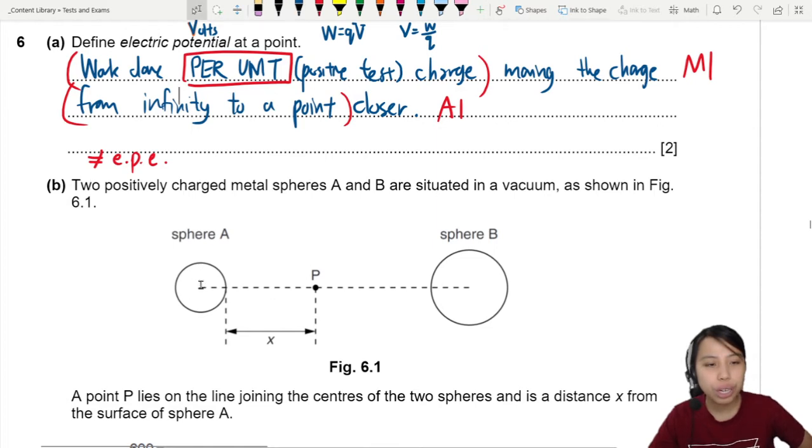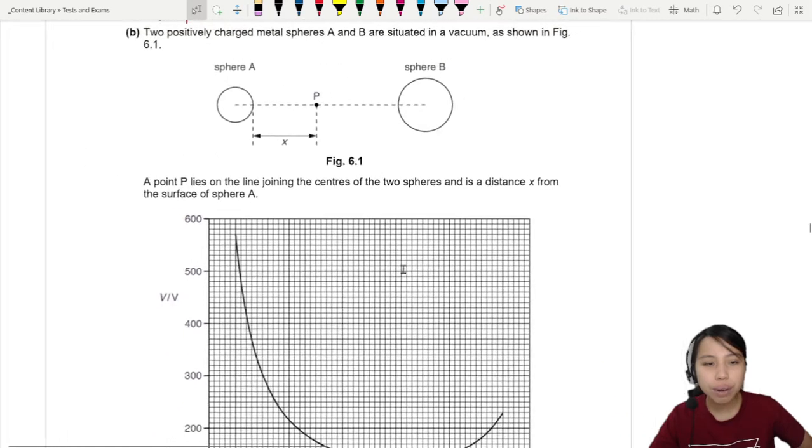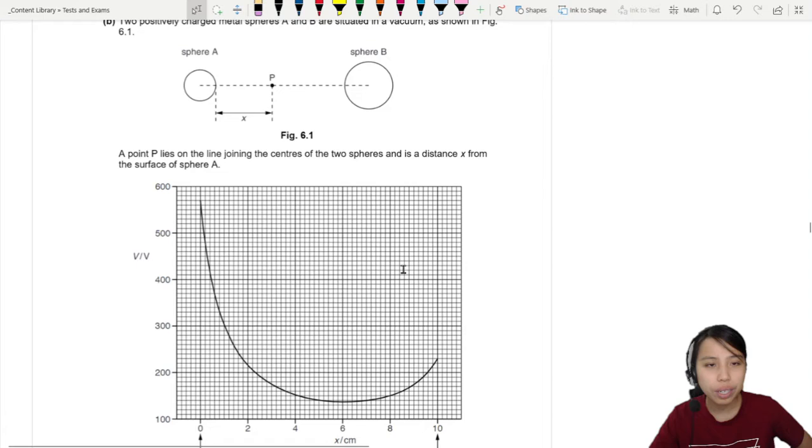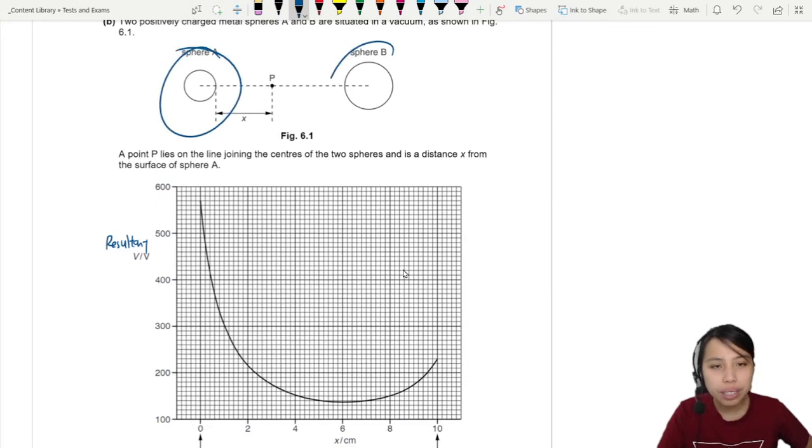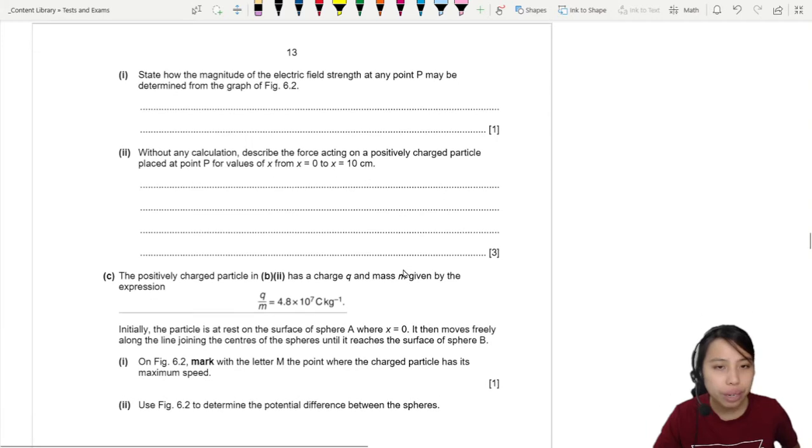Our setup here is we have two charged spheres, A and B, and you have a point P in between where you're going to be traveling on. So they give us the graph of potential between the two spheres. This is a resultant potential graph. This fellow got potential, this fellow also got potential. Add out all the potential, you get this smiley face. And what do we need to do here? We need to state how the magnitude of electric field at any point may be determined from the graph.